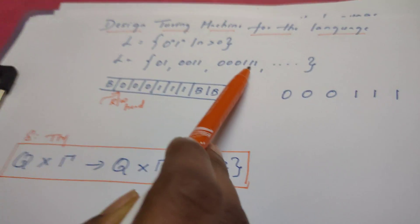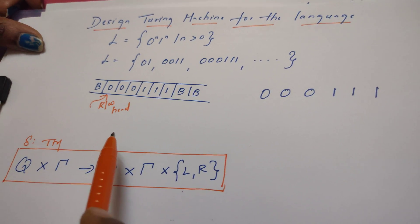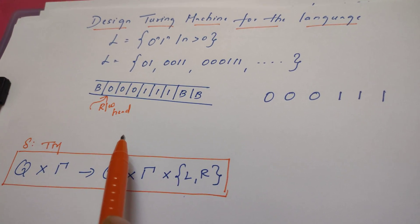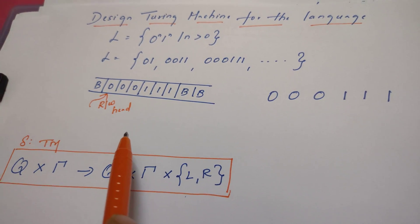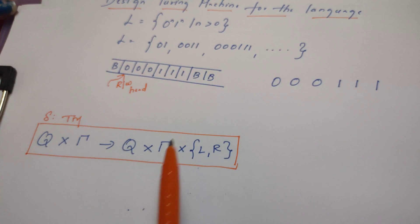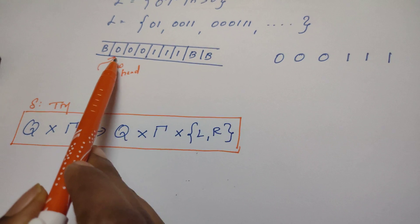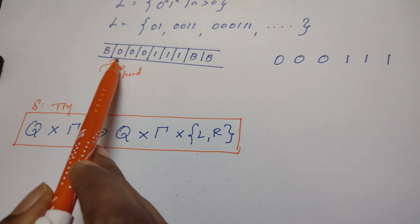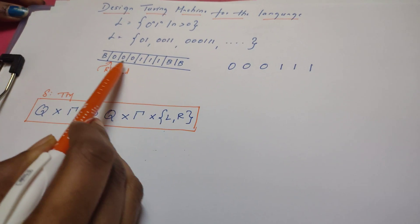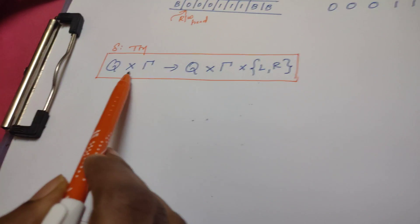In my previous video titled 'Introduction to Turing Machine' I discussed the block diagram, its mathematical model, and transition function. Please refer to that video first so that you will understand better. Now, this is the input tape which is infinite in size. There is a read/write head which is able to read as well as write contents, and it can move left to right as well as right to left.